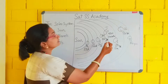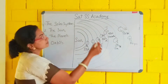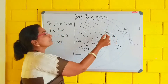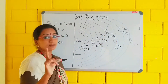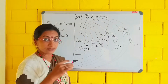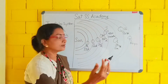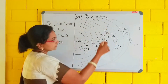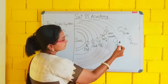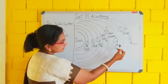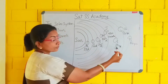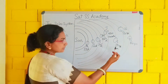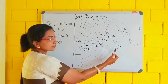Next comes Jupiter. Jupiter is taking 11 years and 11 months for rotating around the sun. Next comes Saturn. Saturn is taking 29 years and 5 months — it is that far from the sun.